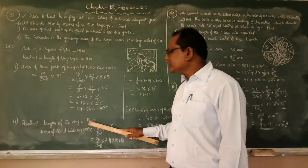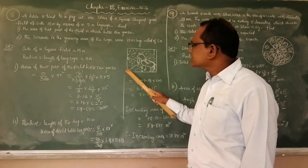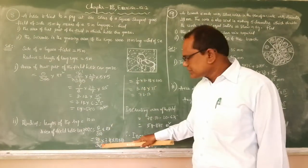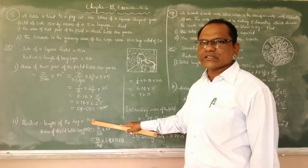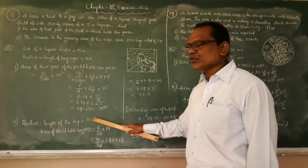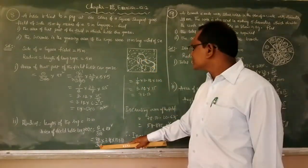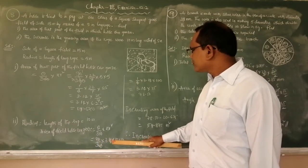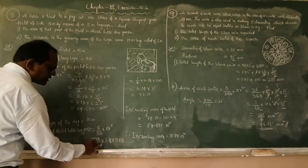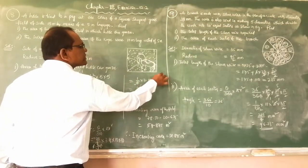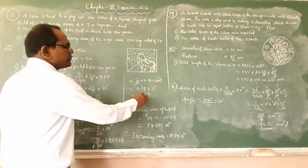Area of the field the horse can graze with rope 10 meters equals the same sector formula: (theta / 360) × π r². The angle is still 90 degrees — the corner of the square equals 90 degrees. So (90 / 360) × 3.14 × 10 × 10 = (1/4) × 3.14 × 100 = 3.14 × 25 = 78.5 square meters.